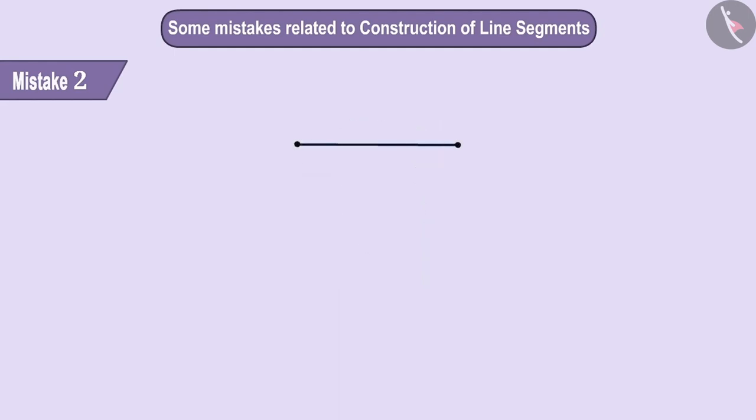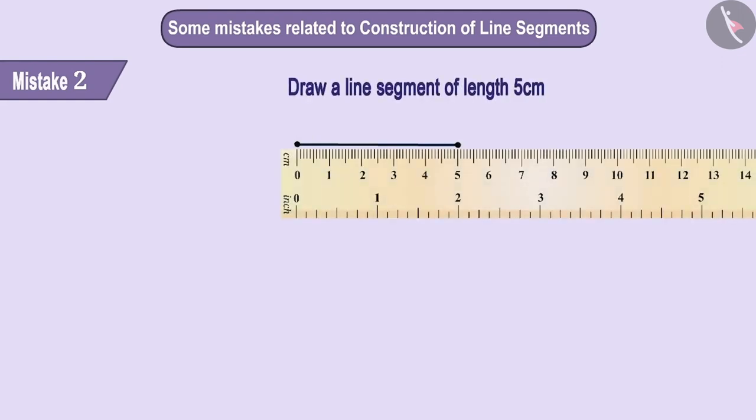Jai drew a line segment of 5 cm length. When Jai measured the line segment, he found its length to be 4.9 cm. This happened because while drawing the line segment, Jai was looking at the sign from the right.